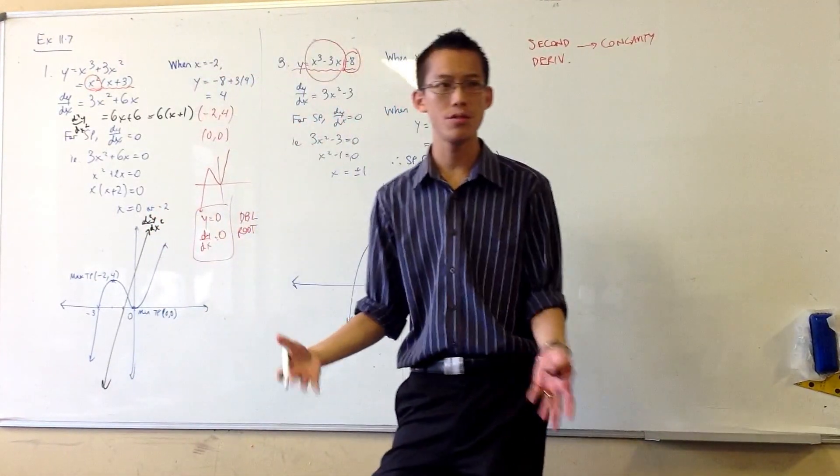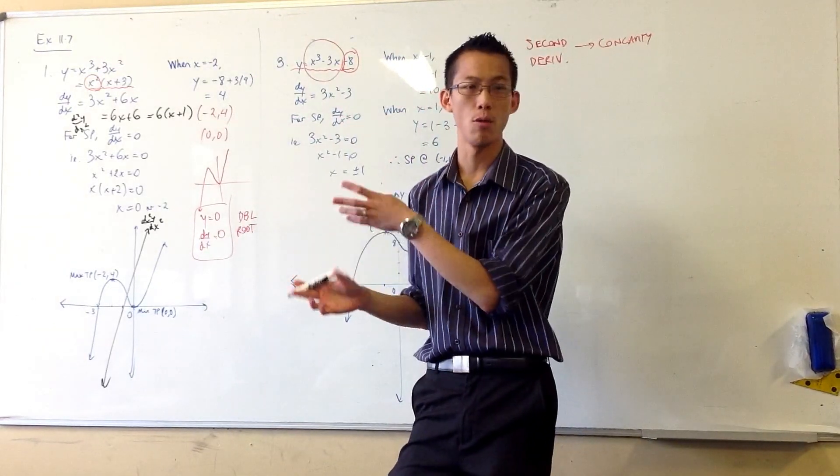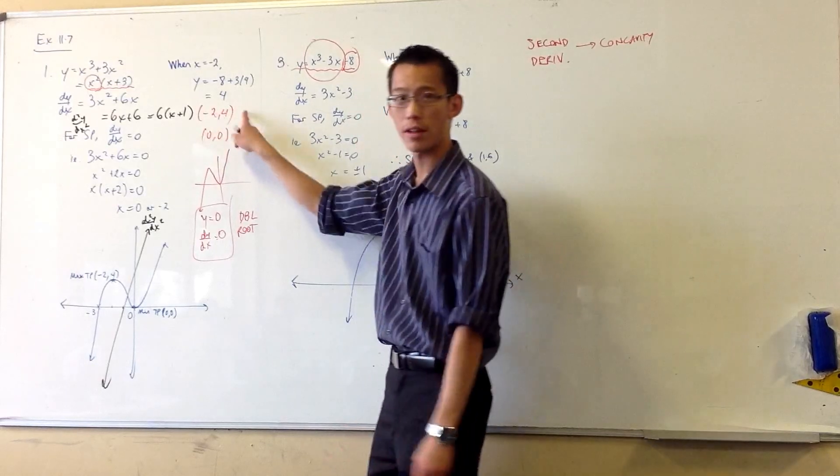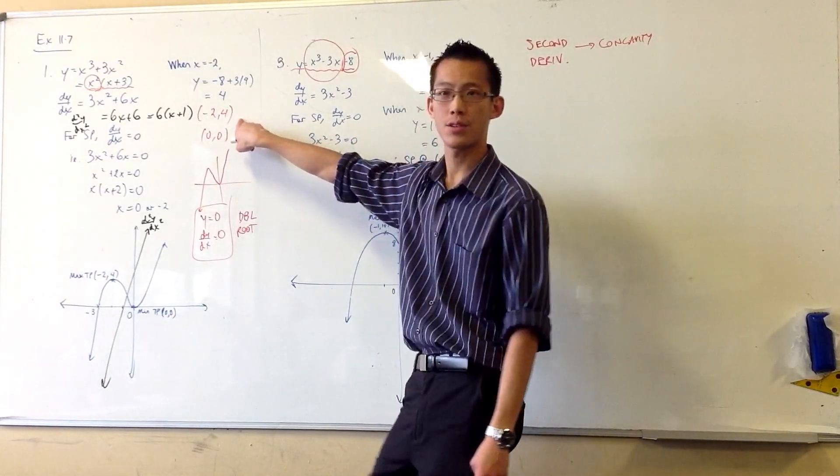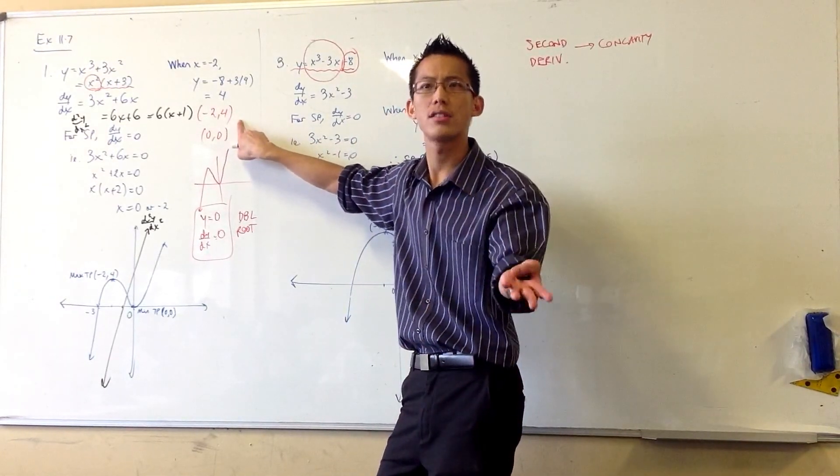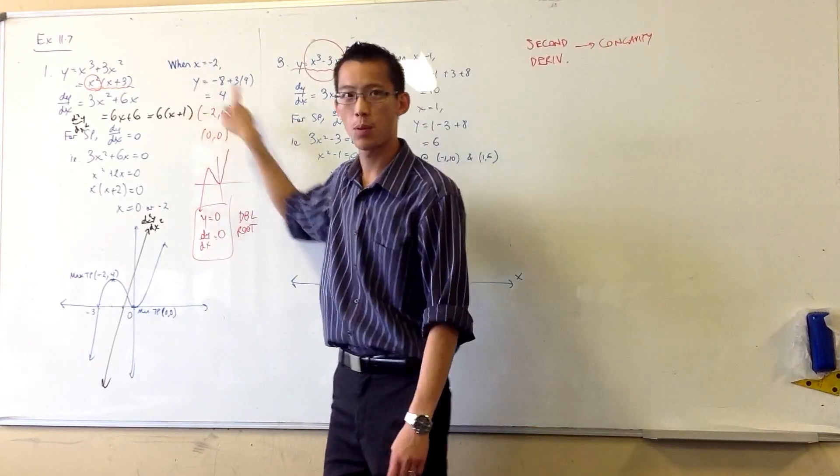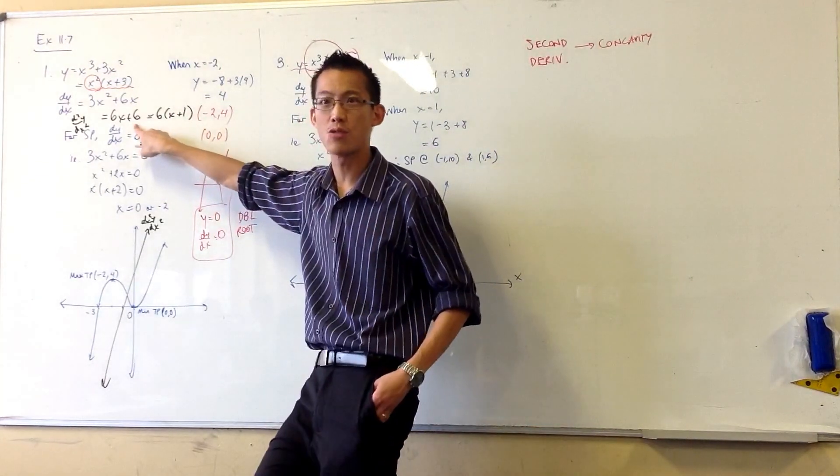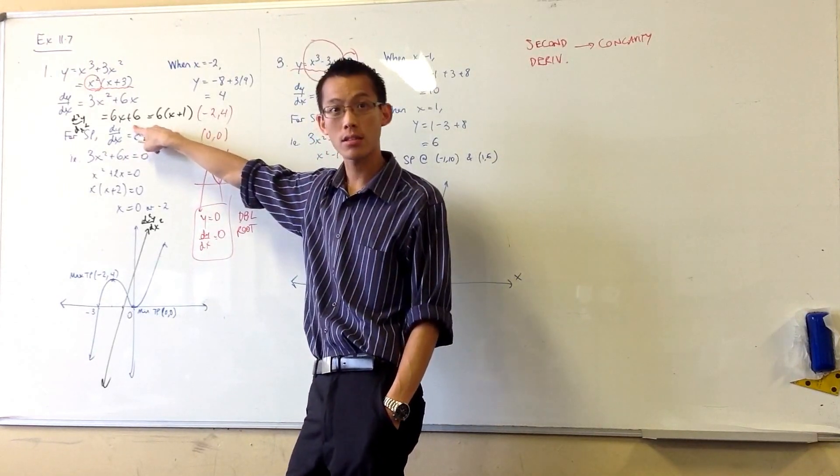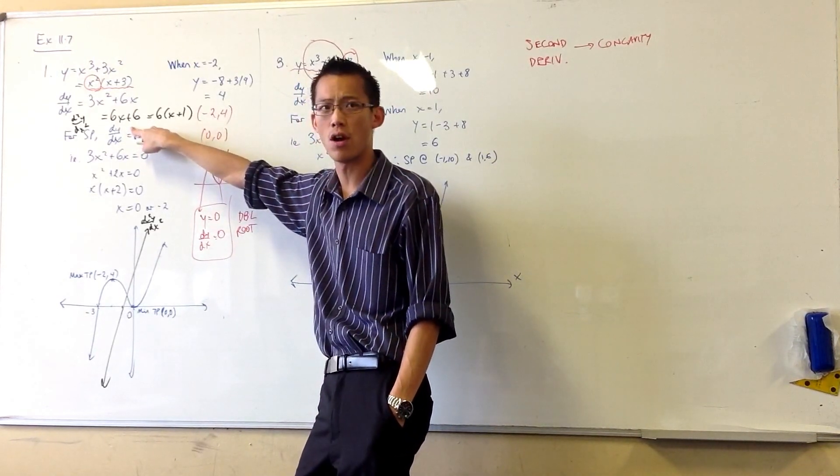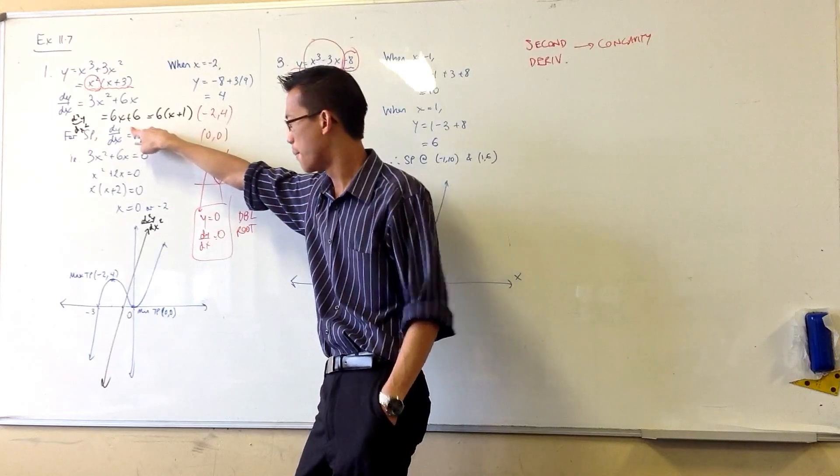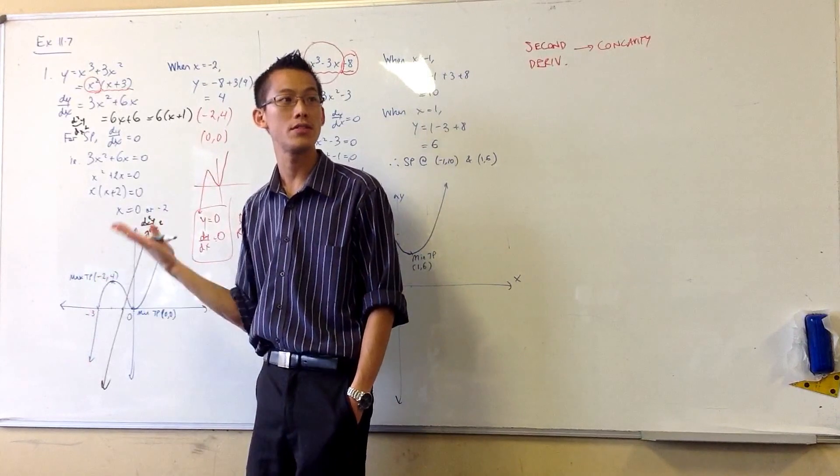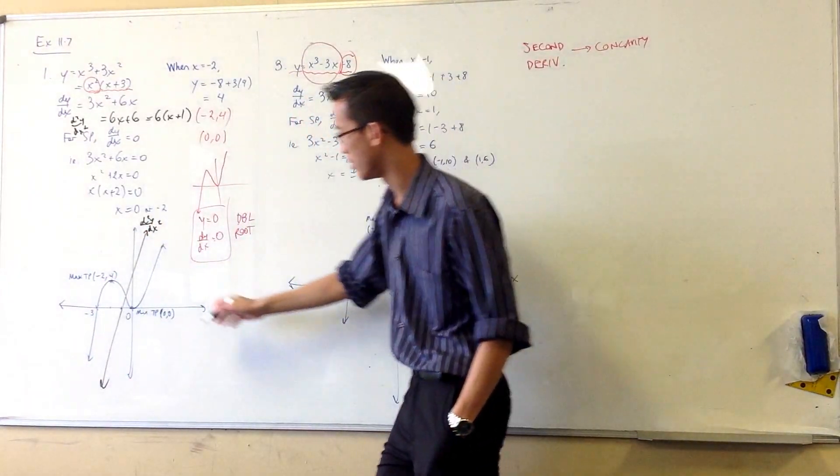Now how can you use this to confirm or get extra information about your graph? Look at these two stationary points I found. For instance, minus 2, 4. What value does the second derivative have at this point? You can go ahead and put in minus 2 here and you'll get minus 12 plus 6, so that's a second derivative of minus 6. But it's really enough to just say, at this point the second derivative is below the axis, so the second derivative is negative. What does that correspond to?